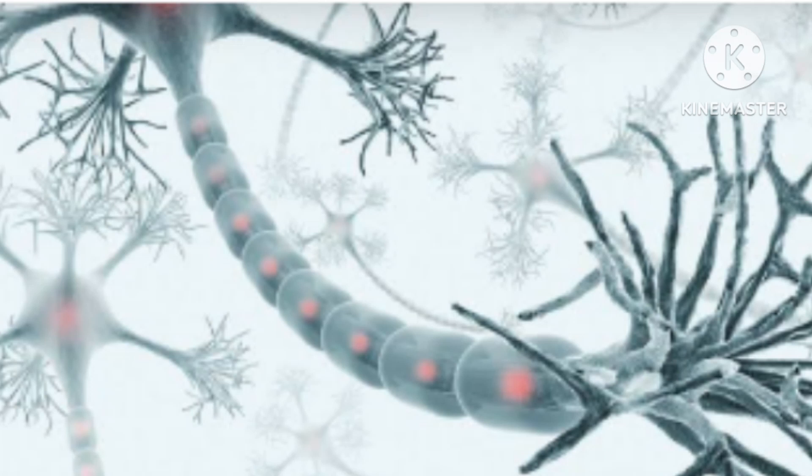The cell body contains the nucleus and cytoplasm. Now let's see how to draw a perfect diagram of a neuron, or nerve cell, in an exam to get good marks in biology.